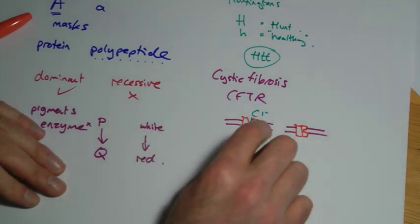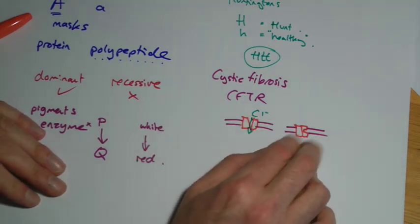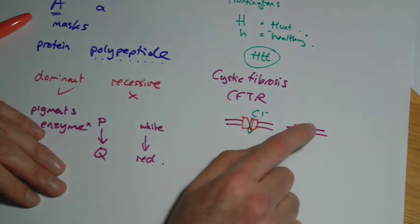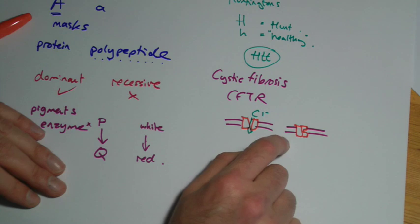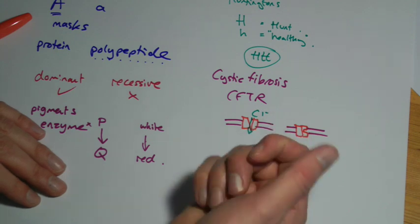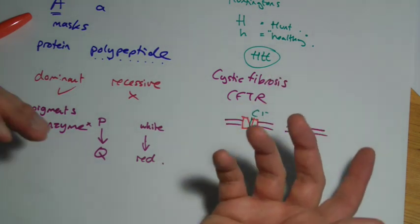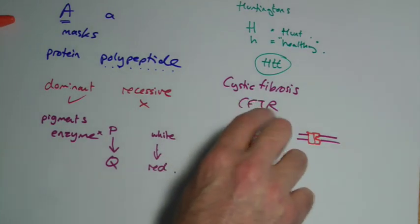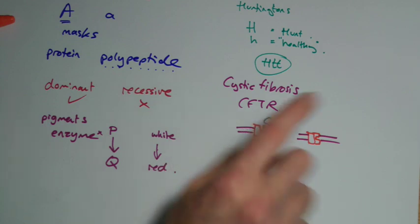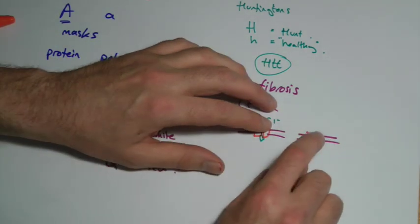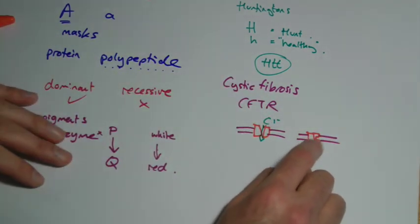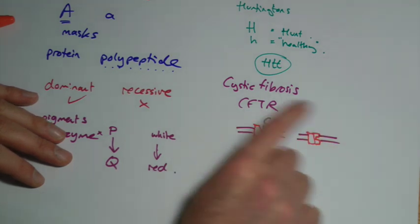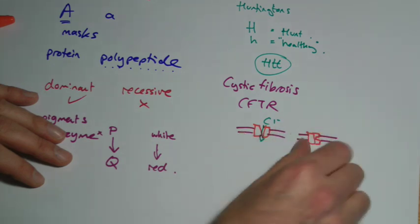Now, the actual precise mechanism and what goes on here is not yet understood. But whatever the reason is, this misshapen protein causes a buildup of mucus in certain organs, particularly the lungs and the digestive system. So in this case, the dominant one makes the correct version, if you like, and the recessive version makes the wrong shape so it doesn't work.